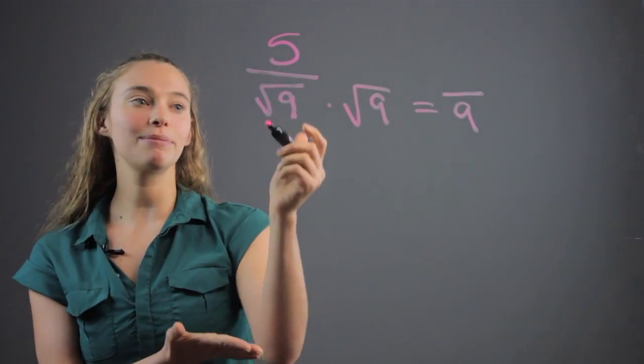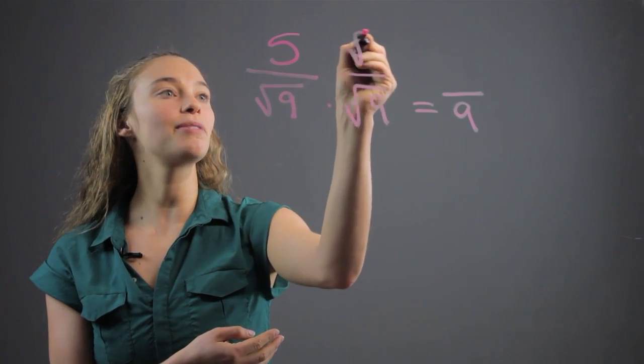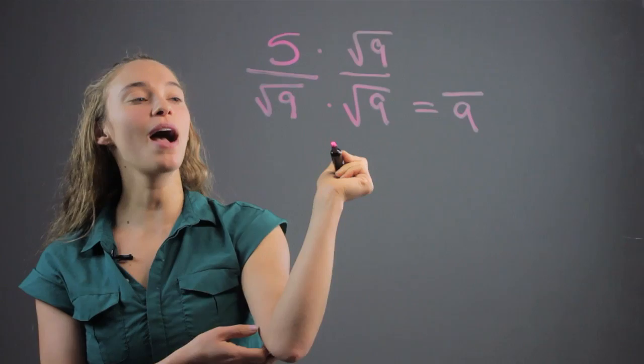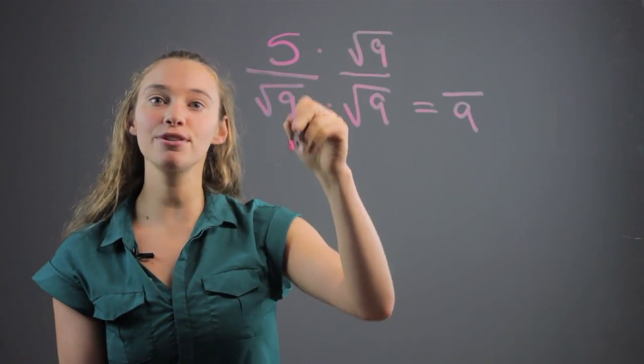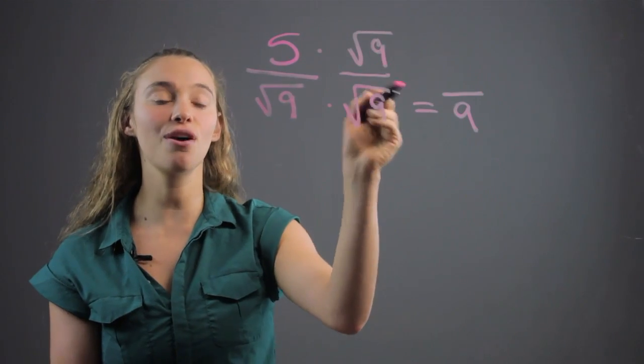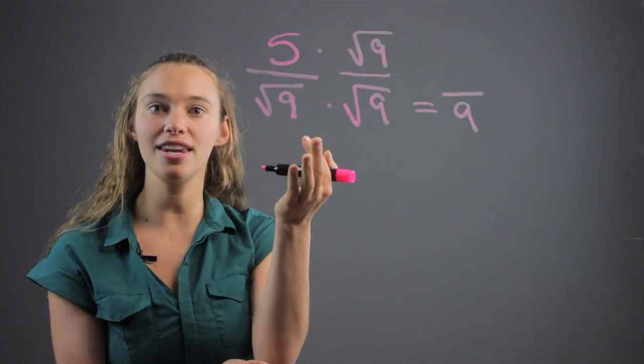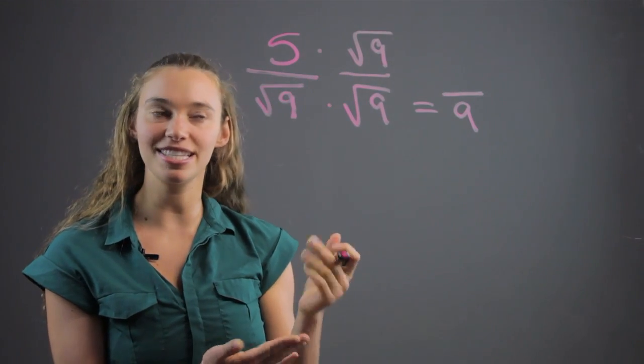But we can't just multiply the denominator by the square root of 9. We have to multiply the numerator by it as well, so that we're actually really just multiplying this fraction by a version of 1. Square root of 9 over square root of 9 is 1. So we can multiply anything by 1 and it stays the same. It keeps its identity.